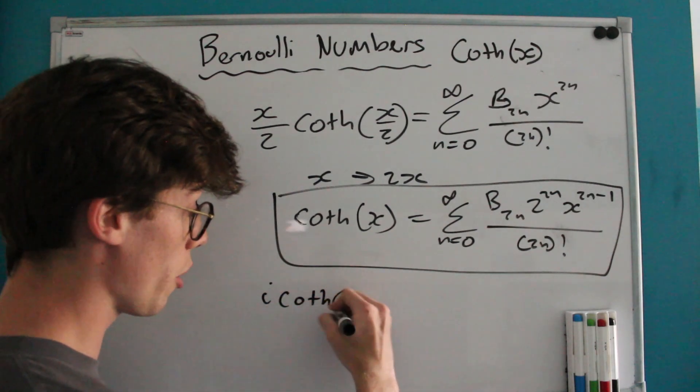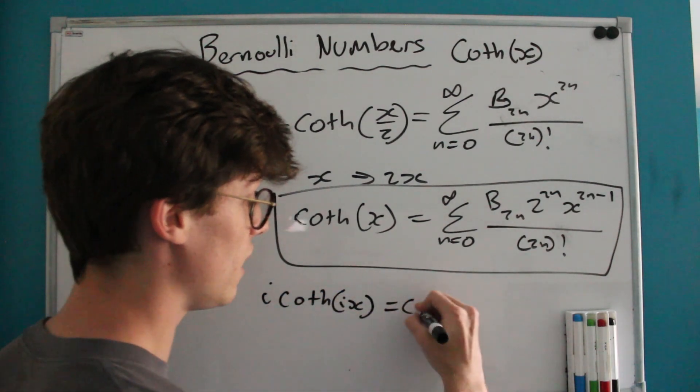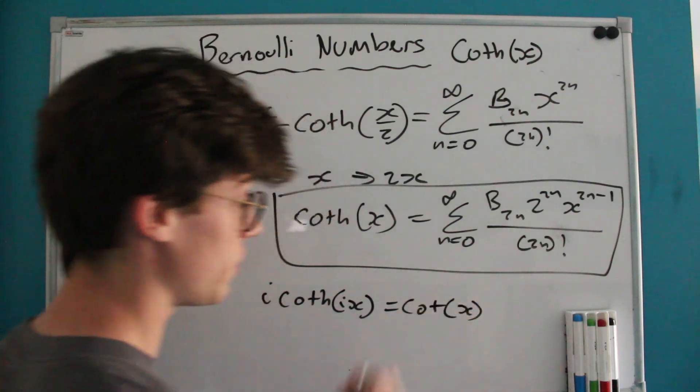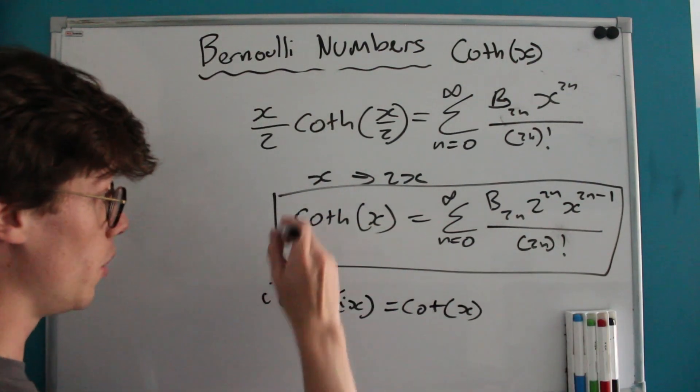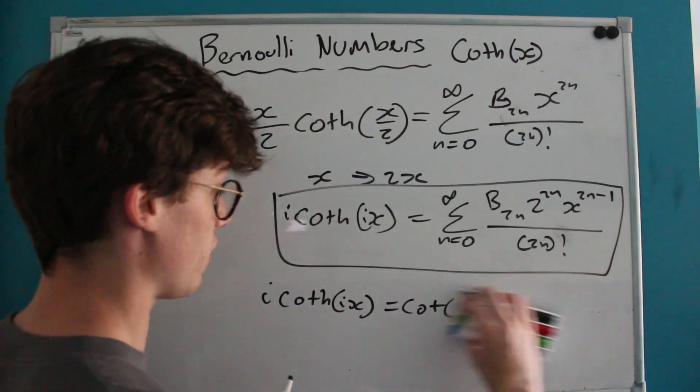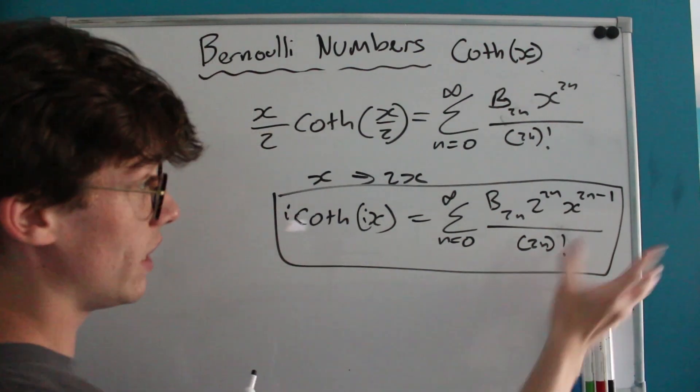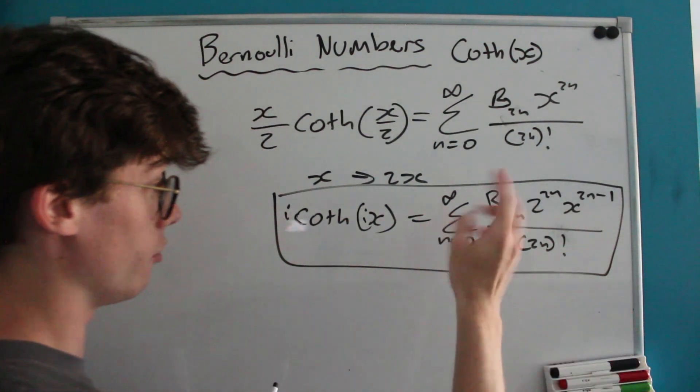So if we multiply by i and put an i next to our X over here, let's see what that does to our numbers on the right-hand side.